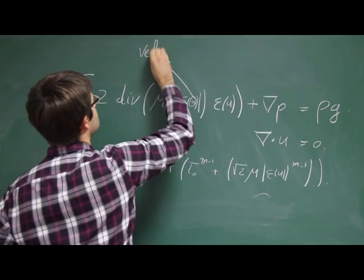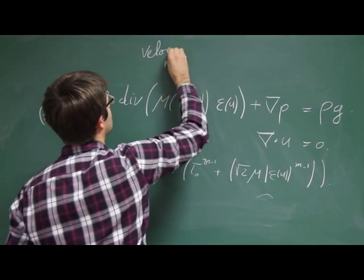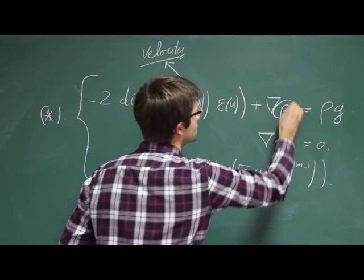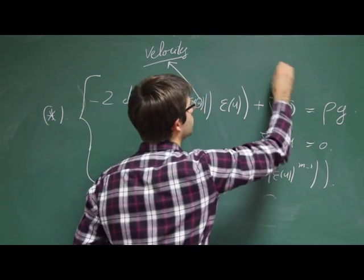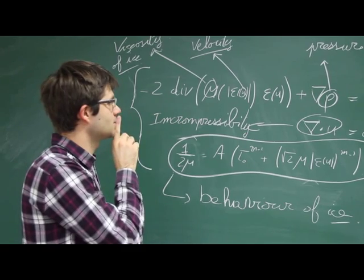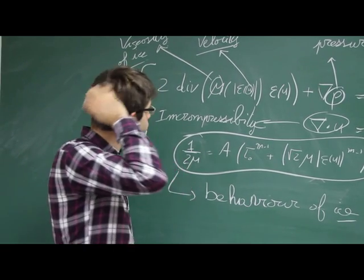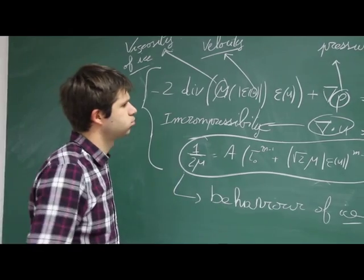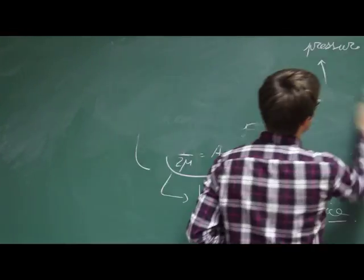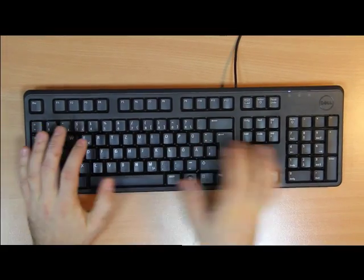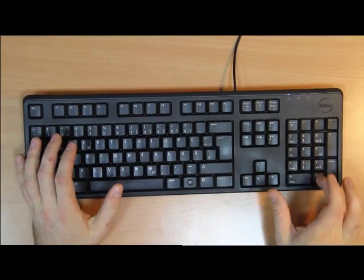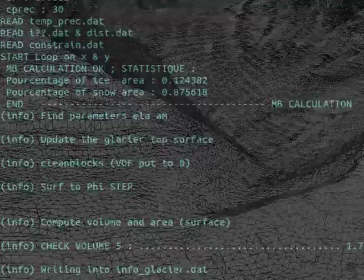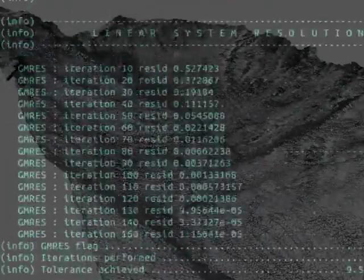The velocities of each ice particle are described by fluid mechanics equations. In practice, these equations are so complex that it is impossible to solve them exactly. Instead, mathematicians have designed algorithms that estimate the velocities along the glacier.